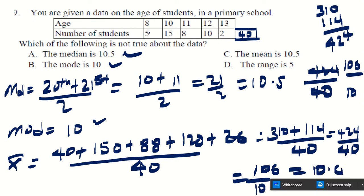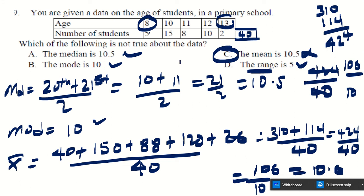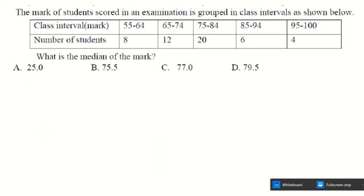The range: maximum age − minimum age = 13 − 8 = 5. So the answer is C (the mean is 10.6, not 10.5).